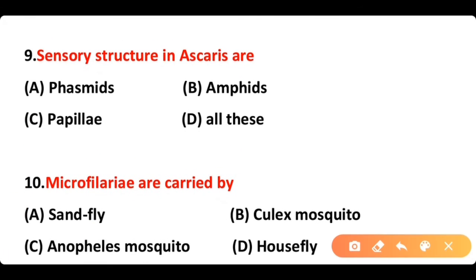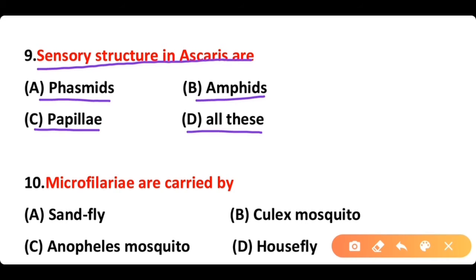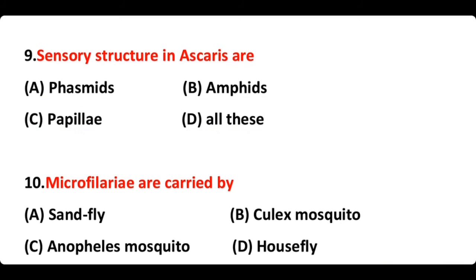Question 9: Sensory structures in Ascaris are: A) phasmids, B) amphids, C) papillae, D) all of these. The correct answer is option D. All three sensory structures — phasmids, amphids, and papillae — are present in Ascaris lumbricoides.